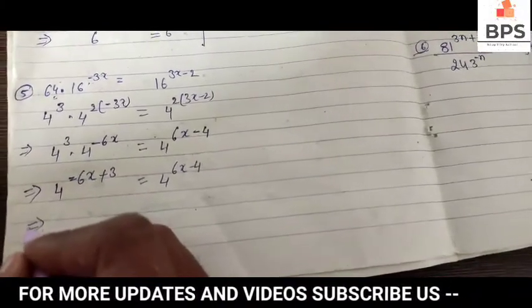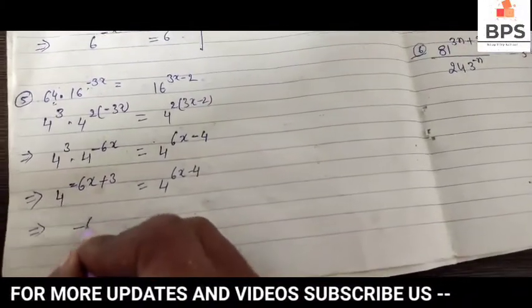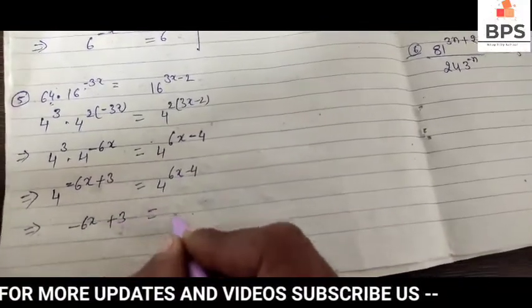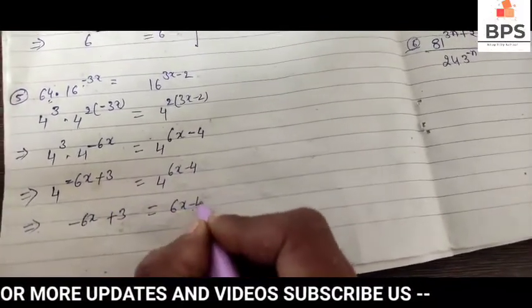Since the bases are equal, we can remove them. This gives us minus 6x plus 3 equals 6x minus 4.